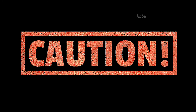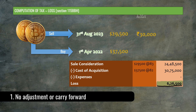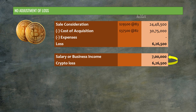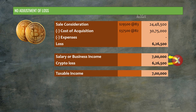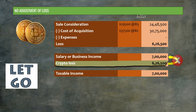Whenever you have crypto losses, provisions of income tax are a bit different, so it is crucial to remember these things. This loss of Rs. 6,26,500 can neither be adjusted against any other income, nor can it be carried forward to subsequent years. For example, if you have salary or business income of Rs. 7 lakh, the usual practice would be to adjust the crypto loss from that income. But in case of crypto losses, this adjustment is not possible — Rs. 7 lakh would be your taxable income — and the crypto loss cannot even be carried forward.